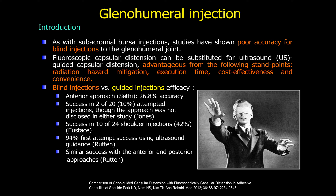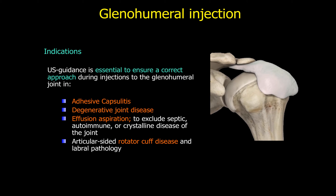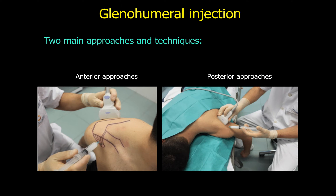Ultrasound is now essential for ensuring correct approach during glenohumeral injections and treatment. Indications include adhesive capsulitis, degenerative joint disease, aspiration of effusion, exclusion of septic or crystalline joint disease, rotator cuff pathology, and labral pathology.